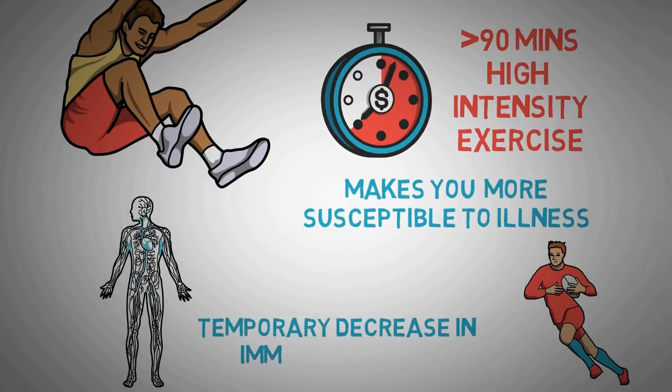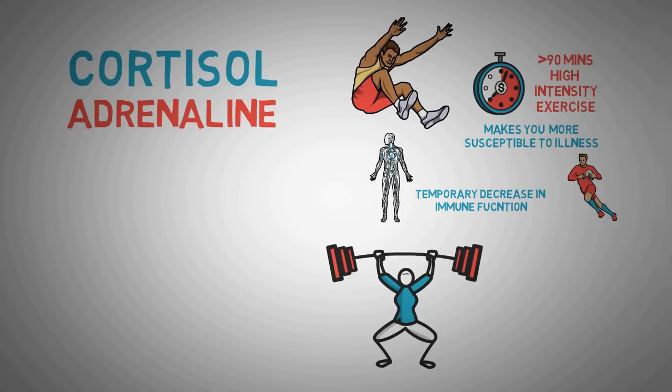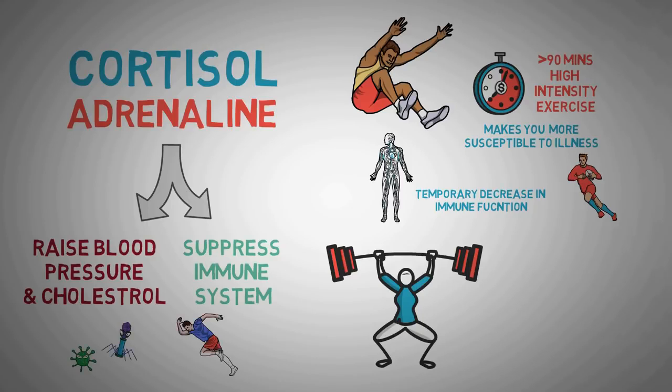Intense exercise seems to cause a temporary decrease in immune function. Researchers have found that during these intense physical exertion periods, the body produces certain hormones that temporarily lower the immunity. Cortisol and adrenaline, or stress hormones, perform numerous important functions in our body, but they also raise blood pressure and cholesterol levels. And they also suppress the immune system. This effect has been linked to increased susceptibility to infections in endurance athletes after extreme exercises.